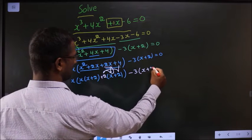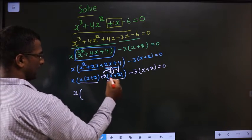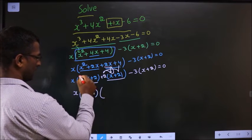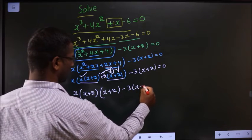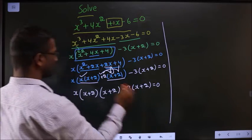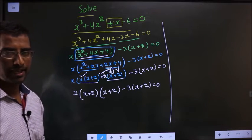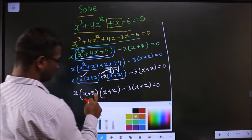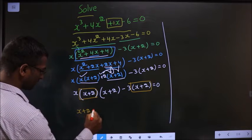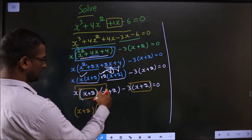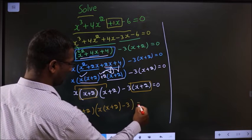Minus 3 times x plus 2 equal to 0. From these two groups, take x plus 2 common — you are left with x and plus 2. Now take x plus 2 common. So if I take x plus 2, here I am left with these two: x times x plus 2, and here it is minus 3. Equal to 0.